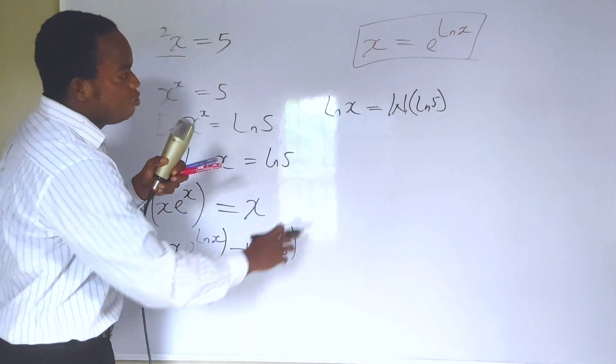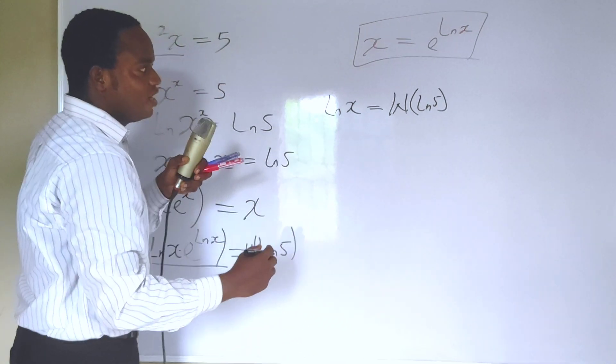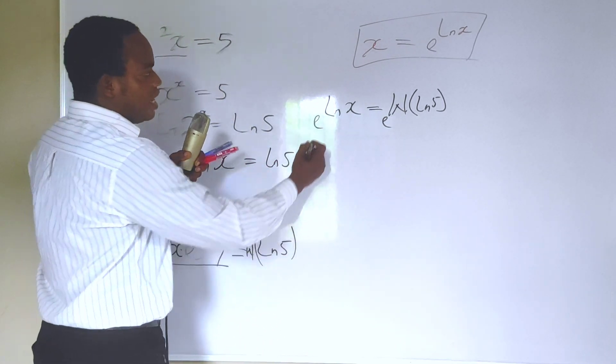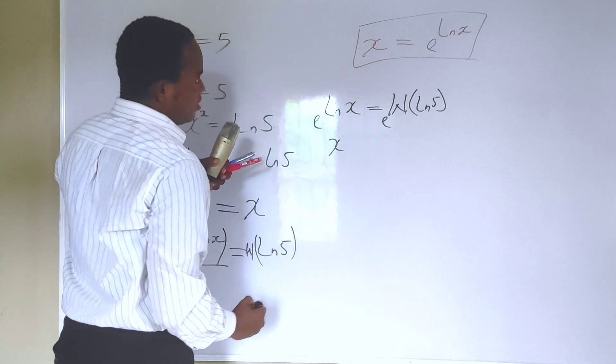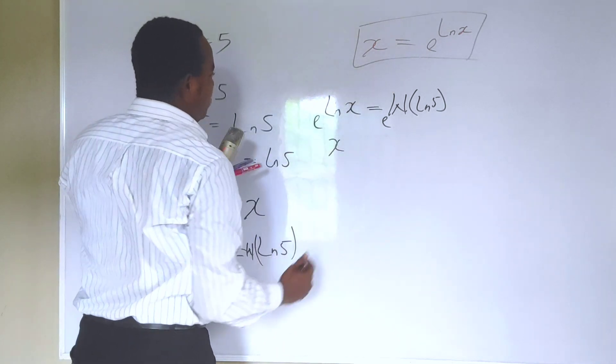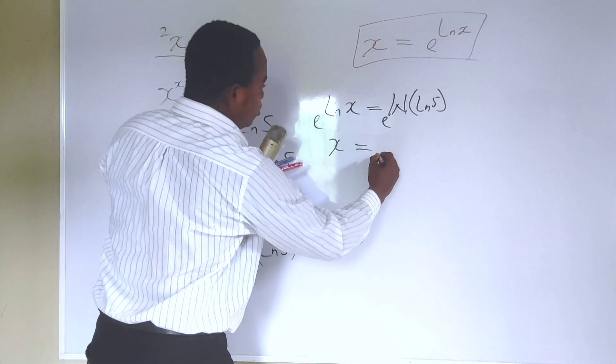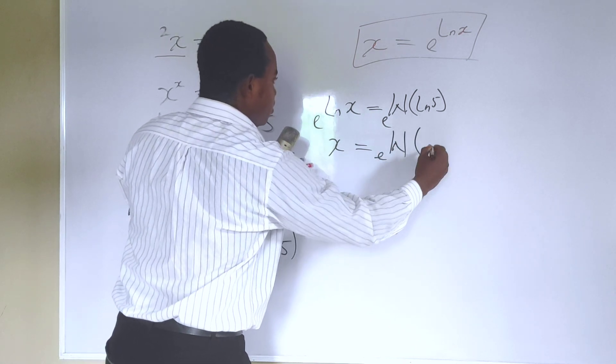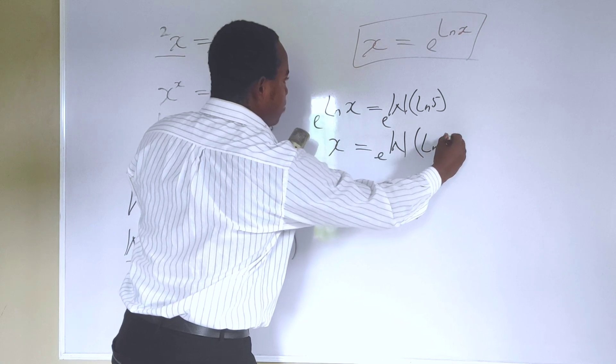At this point, how do we get rid of this natural log here? We can do that by taking the exponent of both sides. And that reduces this to x, just like what we have here. And that is equal to taking the exponent of the Lambert W function of the natural log of 5.